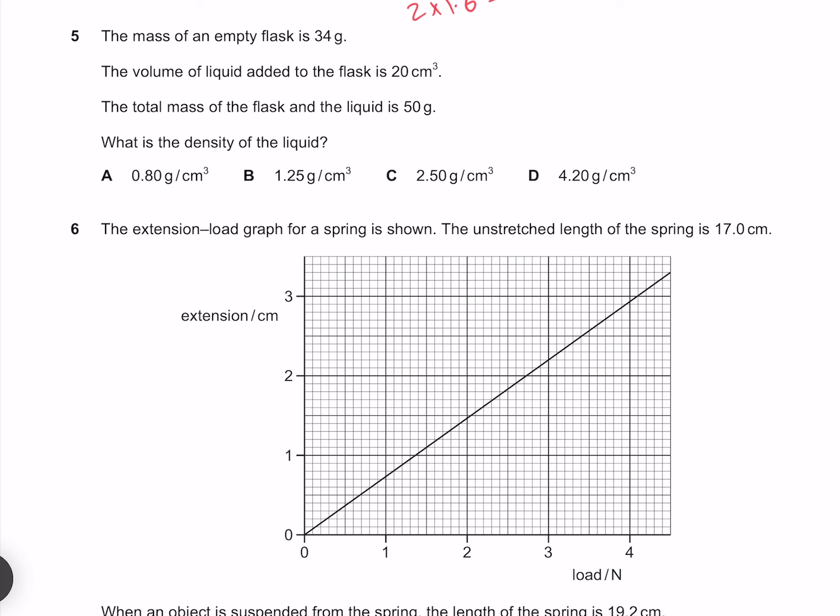The mass of an empty flask is 34 grams. The volume of liquid added to the flask is 20 centimeter cubed. The total mass of the flask and the liquid is 50 grams. What is the density of the liquid? Our density is equal to the mass per volume where because we're asked for the density of the liquid we need to use the mass of the liquid. The mass of the liquid is the difference between our total mass of 50 and the mass of our empty flask of 34. And our volume is just 20. Which gives me 0.8 grams per centimeter cube, which is our answer A.